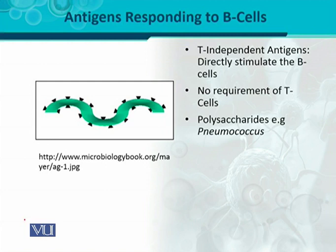For example, pneumococcus — a gram-positive coccus whose outer surface capsule contains polysaccharide. That capsule or polysaccharide serves as a T-independent antigen, and B cells respond to it as a T-cell-independent antigen, meaning they do not take the help of T cells.